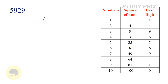The next question is 5929. The square root of this number must be a 2-digit number. Take the last digit 9 and come to the table. Find where the last digit 9 lies — it appears here and here also. The corresponding numbers are 3 and 7. Therefore the last digit must be 3 or 7.